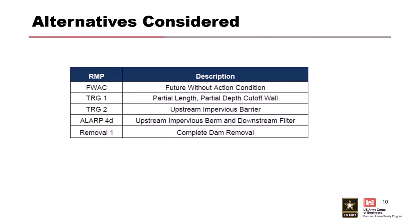Going into the modification study, five alternatives were evaluated. Future without action and complete dam removal were not considered — the risk was too high for the former, and the dam still provides flood control benefits. The team looked at three alternatives: a partial-length, partial-depth cutoff wall; an upstream impervious barrier; and a third option. The partial cutoff and the impervious berm were more cost-effective and had less construction risk associated with them. The upstream impervious barrier was selected as the plan.